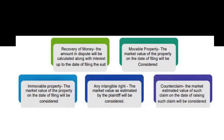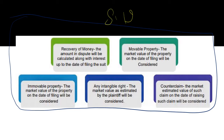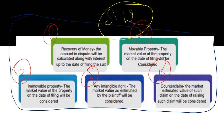Let's recap Section 12 for better understanding. You must go through these five determinants — this is a very important section. Take a screenshot if you want. The first determinant was recovery of money; second, movable property; third, immovable property; fourth, intangible right; and fifth, counter claim.